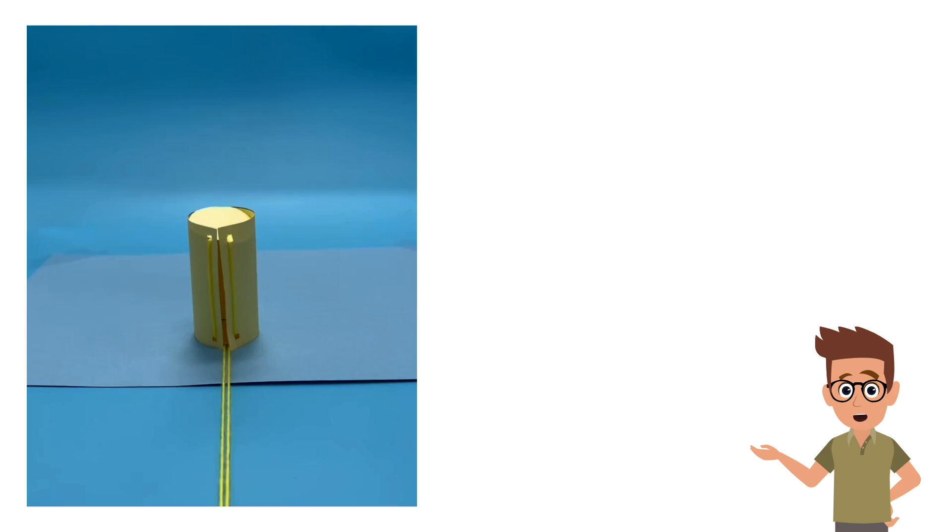We can cut the cylinder along its curved surface and around its circular ends. Then, we can open it up to find its net.